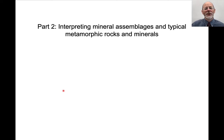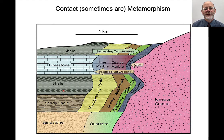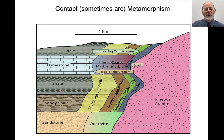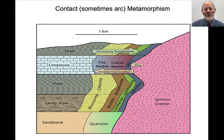Let's think about how to interpret mineral assemblages and look at some typical metamorphic rocks and minerals. Here, for example, is a sketch of a theoretical contact aureole from John Winter's textbook on igneous and metamorphic petrology. You have a heat source and various rocks that abut the intrusion. Depending on what the bulk composition of the rock is — whether it's a shale, a limestone, or a sandstone — you'll get different kinds of rocks that form.